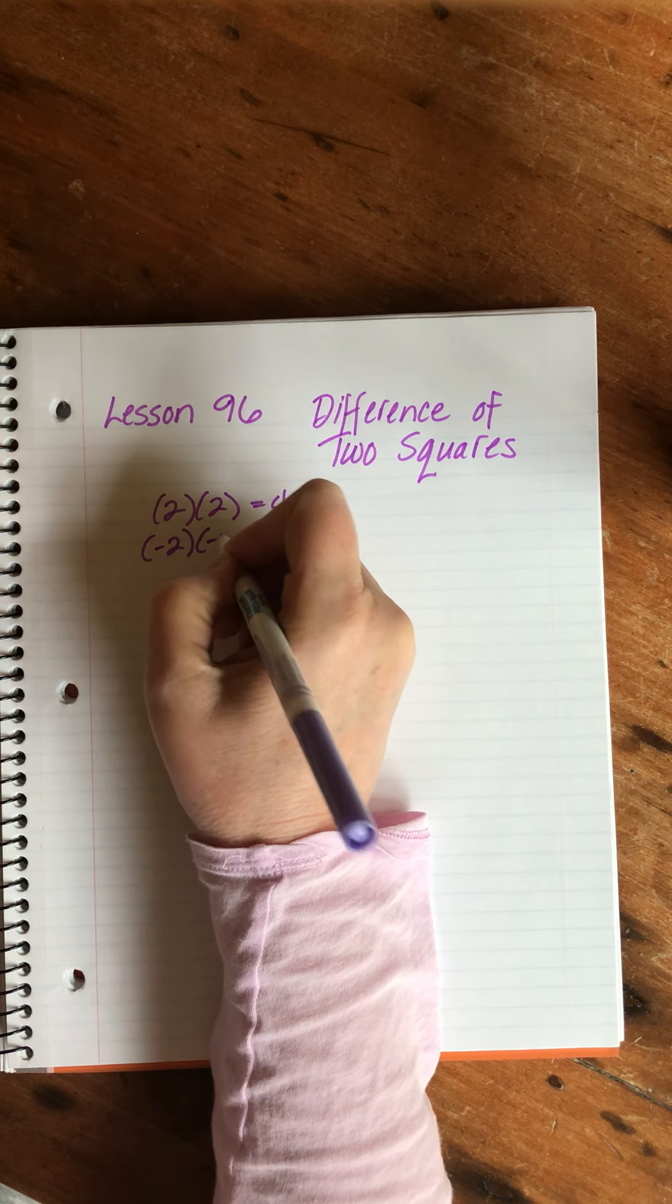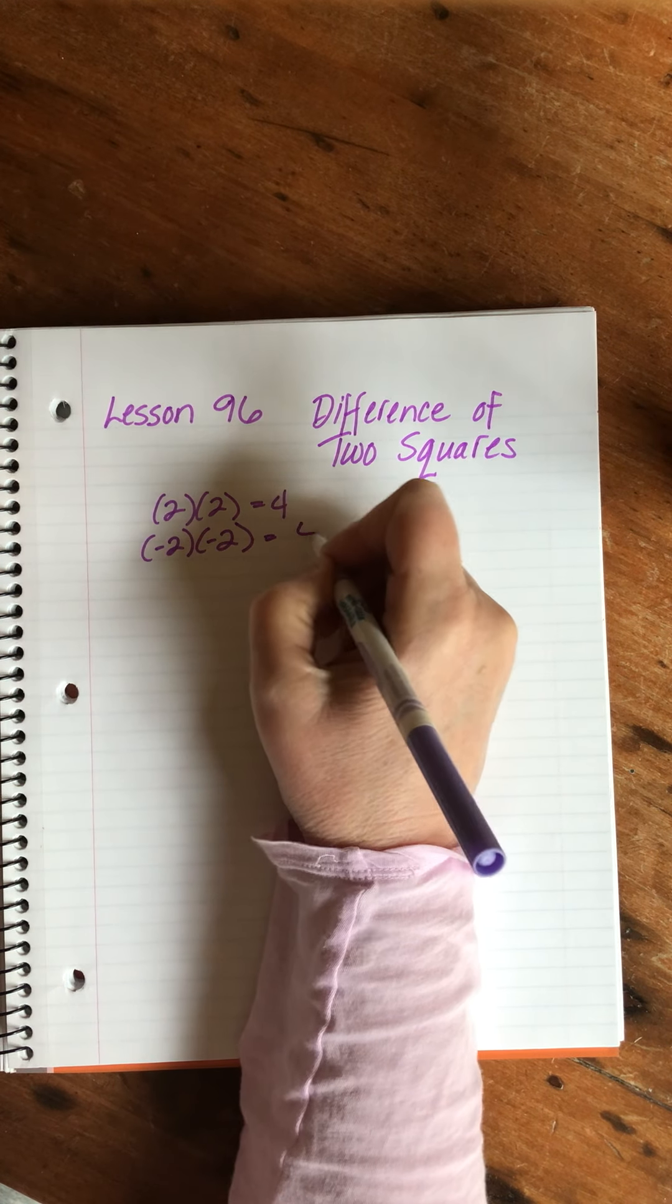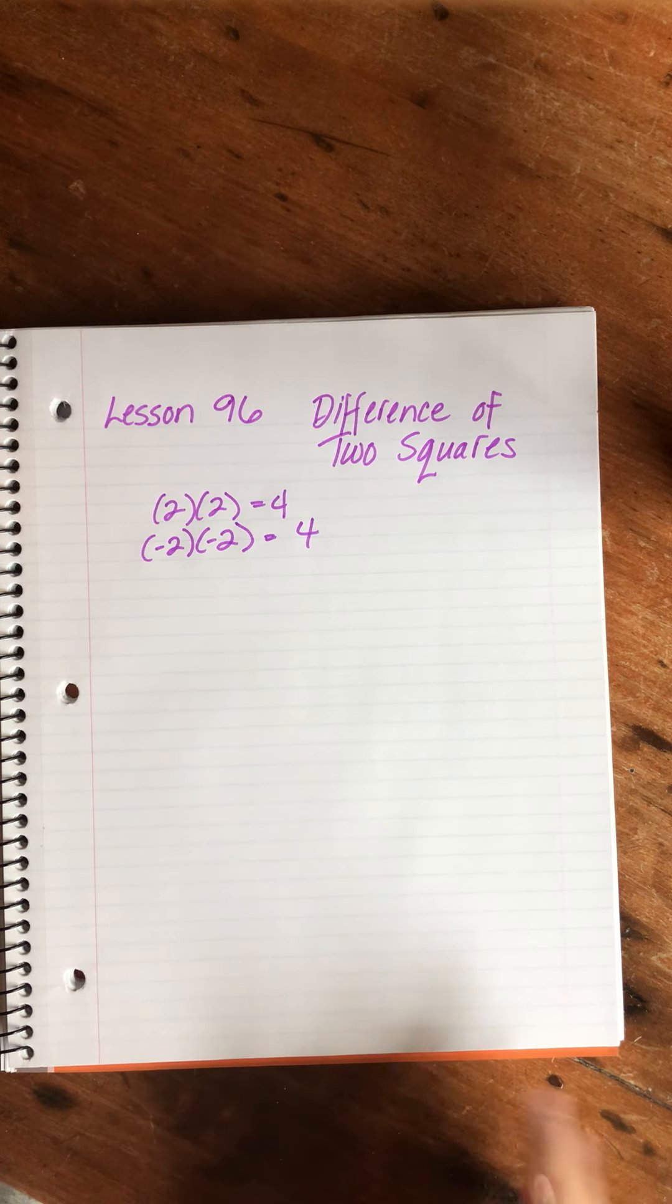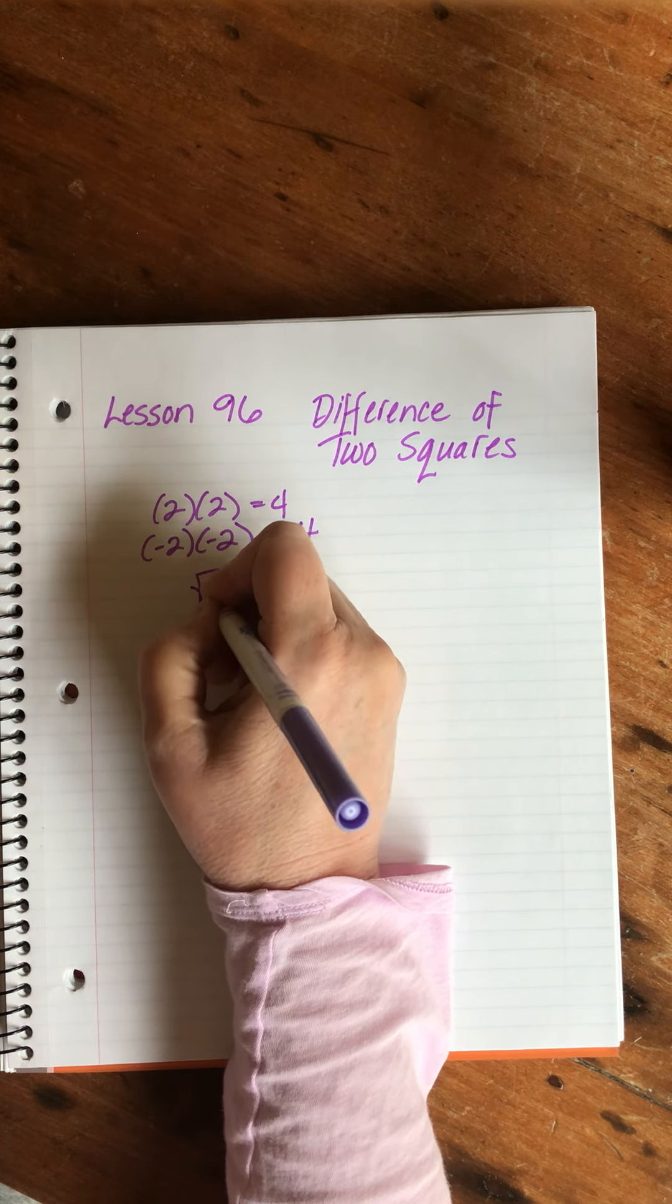So we could say that the square root of four is two and minus two, but we typically only focus on this. We say the square root of four is two.